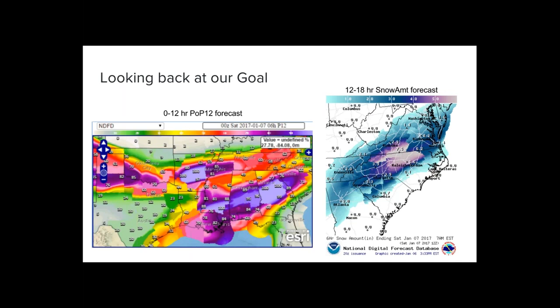Some of you may remember the recent mixed precip types storm down in the southern and southeastern U.S. I want to look back at this event because I think back to our goal, which was to go for a more consistent forecast while maintaining accuracy. These images were basically from not too long ago before we started this experiment, and that's where we've come. That's just a testament of what's been going on.